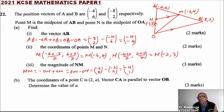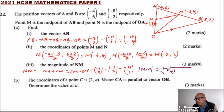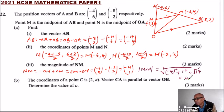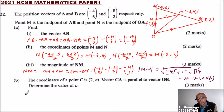To get the magnitude of NM, we say |NM| = √((-4)² + 1²) = √(16 + 1) = √17. Using a calculator, √17 = 4.12 to two decimal places. That is the magnitude of NM.